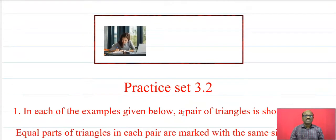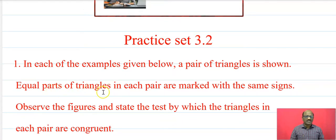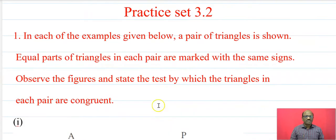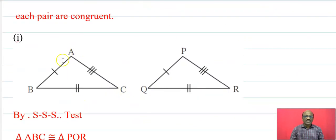Now we will see practice set 3.2. It's very simple. In each of the examples given below, a pair of triangles is shown. Equal parts of the triangles in each pair are marked with the same sign. Observe the figure and state the test by which the triangles in each pair are congruent, in triangle ABC and triangle PQR.